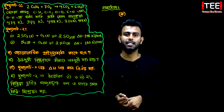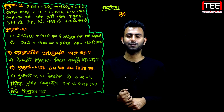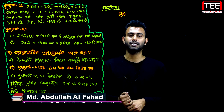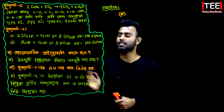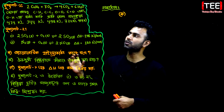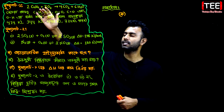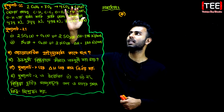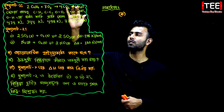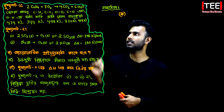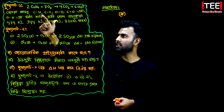Hello viewers, assalamualaikum. Welcome to Easy Education. Today we will take a couple of questions and share key information. Basically, we need to be clear about carbon dioxide going away. There are 5 moles of oxygen gas, turbine gas is 4 moles, water is 6 moles. The information covers carbon-hydrogen bond, carbon-carbon single bond, oxygen-oxygen bond, carbon-oxygen bond, and oxygen-hydrogen bond.